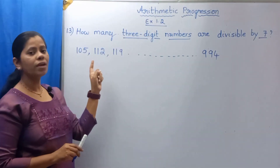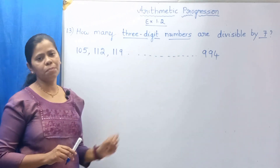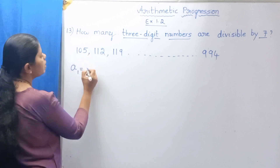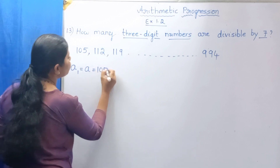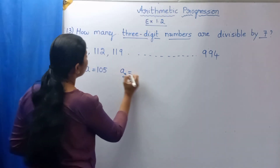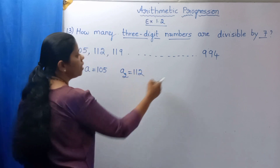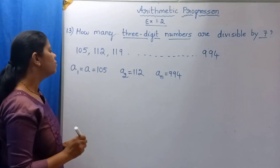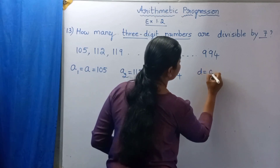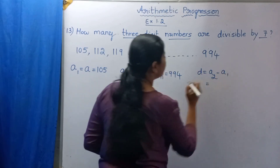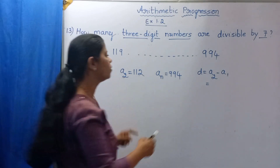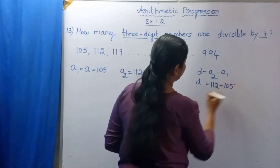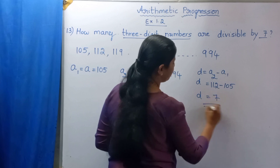So these numbers are in AP. A1 = 105, A2 = 112, and the last term An = 994. D = A2 − A1 = 112 − 105 = 7.